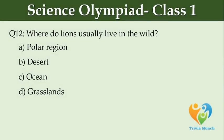Where do lions usually live in the wild? Option A: Polar Regions. Option B: Desert. Option C: Ocean. Option D: Grasslands.